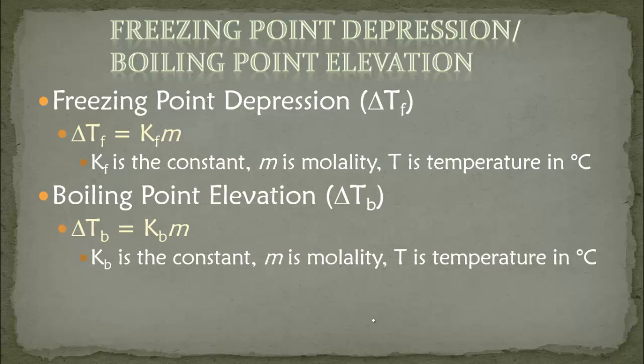For boiling point elevation, we still have the same symbol delta T, but B for boiling. The equation is basically exactly the same: delta Tb equals KB times M, where B just means boiling. The only difference between the two equations is the constant value that you plug in.